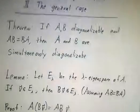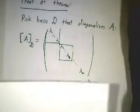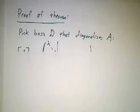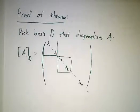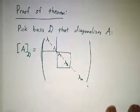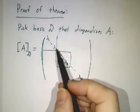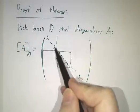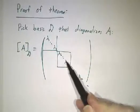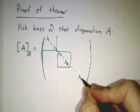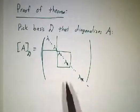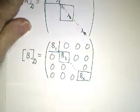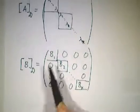Okay, now armed with that lemma, here is the proof of the theorem. So first, we're going to pick a basis that diagonalizes A. Now, some of the eigenvalues of A might be repeated. You might have λ1 a bunch of times and then λ2 a bunch of times and all the way out to, let's call it λK. That's fine.